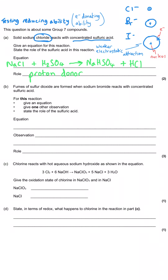In the second part of the question, fumes of sulfur dioxide are formed when sodium bromide reacts with concentrated sulfuric acid, proving that bromide is a better reducing agent than chloride. This is a three-mark question with three separate commands — one mark each: give an observation, give an equation, and state the role of the sulfuric acid. The sulfuric acid is acting as an oxidizing agent because it accepts electrons from the bromide ion, making bromide the reducing agent.